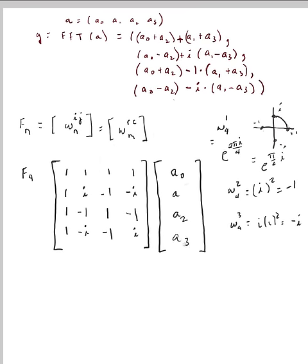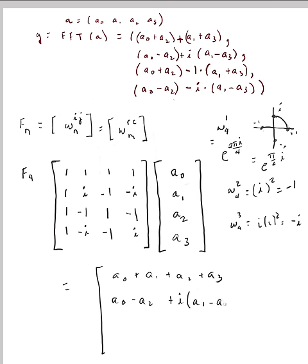Multiplying the matrix and vector: the first row dot product gives a_0 + a_1 + a_2 + a_3 — those four things added together, which matches. The second row gives a_0 + i·a_1 - a_2 - i·a_3. Checking that against our first coefficient, we have a match.